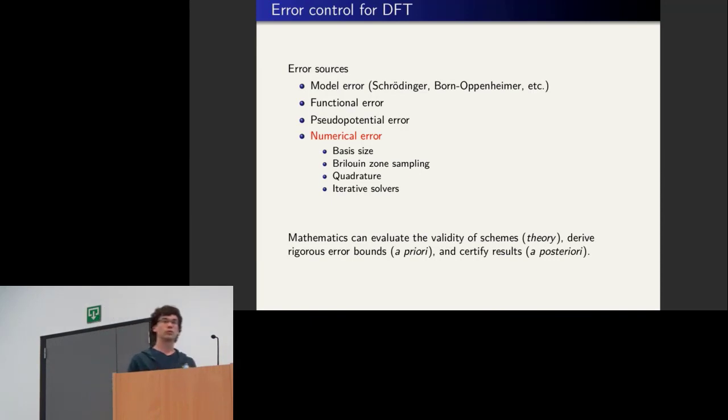And so what we do with mathematicians mainly falls into three categories. First is theory, to understand the models: are they well-posed, does it have a solution, this kind of thing. Second, derive a priori error estimates: the error you make by making this particular approximation is this. Third, a posteriori error estimates, which is certified results, which is more what this workshop is about, saying here's my error bar for a particular computation.